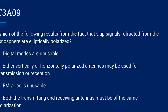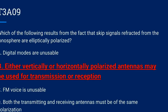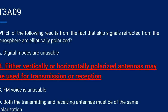T3A09. Which of the following results from the fact that skip signals refracted from the ionosphere are elliptically polarized? A. Digital modes are unusable. B. Either vertically or horizontally polarized antennas may be used for transmission or reception. C. FM voice is unusable. Or D. Both the transmitting and receiving antennas must be of the same polarization. Correct answer is B: either vertically or horizontally polarized antennas may be used for transmission or reception.